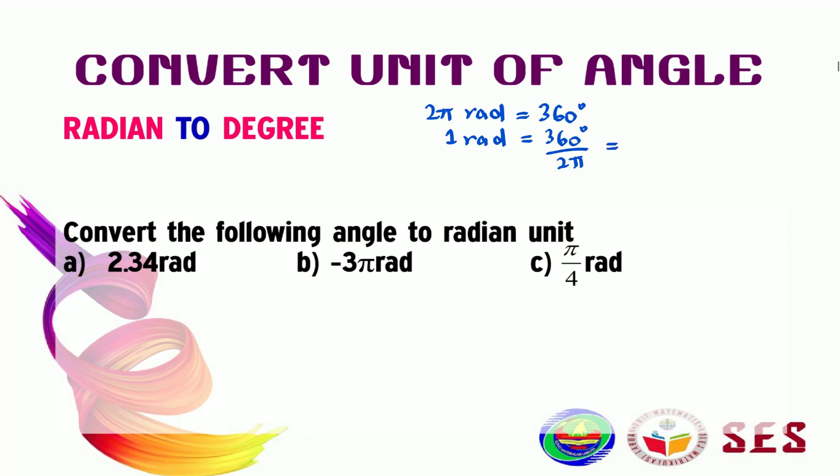Let's see the first example here. To change this to degrees, we need to multiply this, so 2.34, multiply this by 180 degrees over π. And this will give you 134.1 degrees.